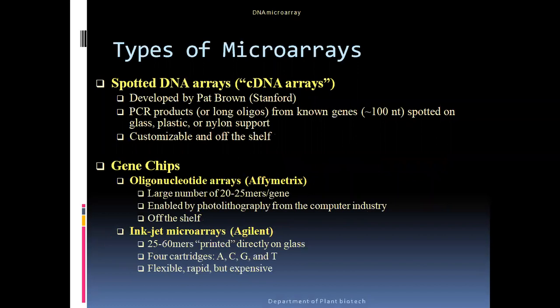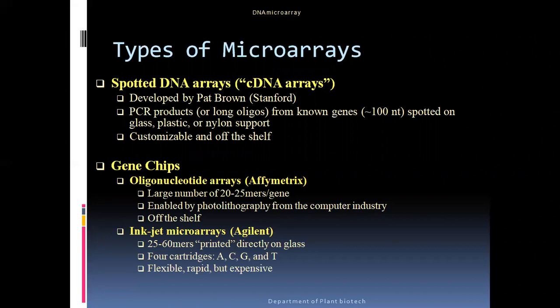There are two main types of microarrays. The first is spotted DNA microarrays, also called cDNA arrays. The second type is oligonucleotide arrays. Both of these are hybridization-based microarrays.